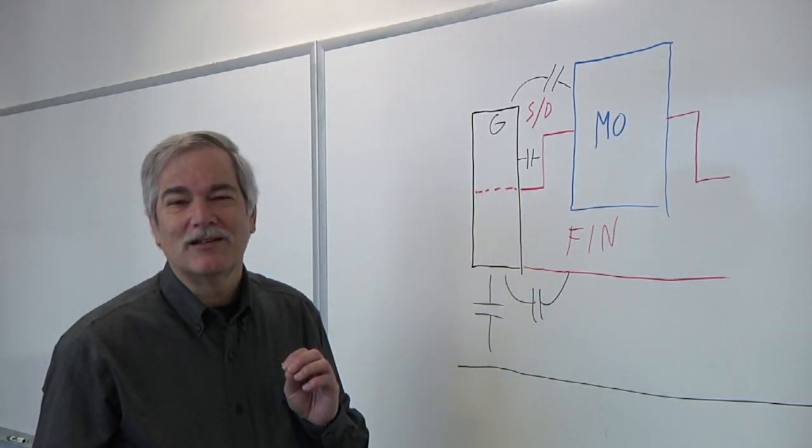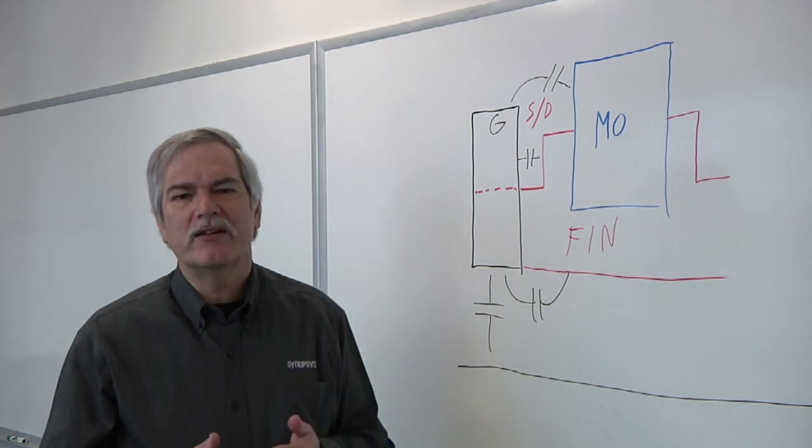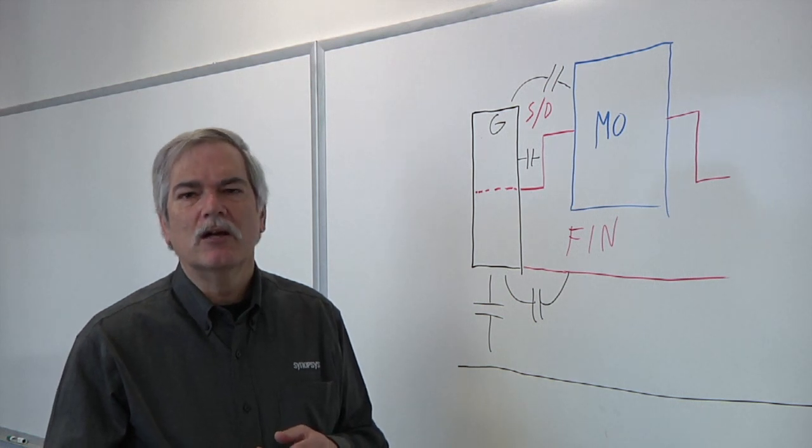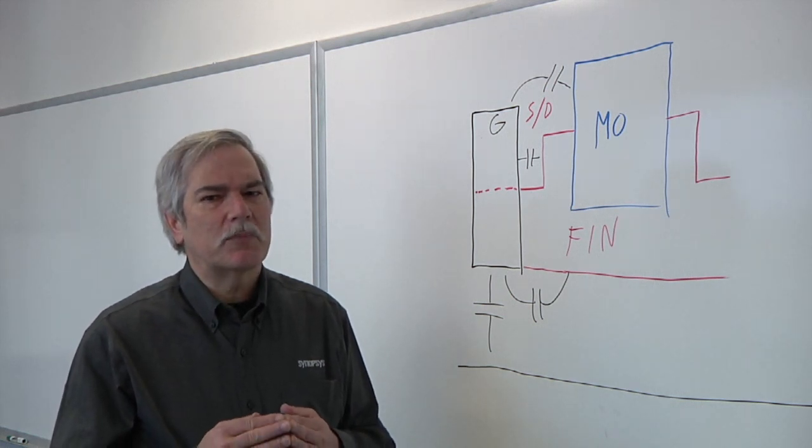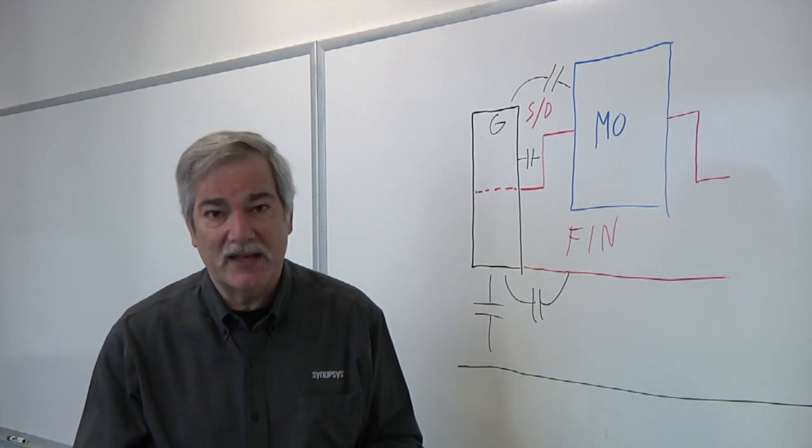So as the gate oxide thins out, what changes there as well? Well, with thinner gate oxide, you'll get larger capacitance involved with the gate oxide. In addition, people will use materials with fairly high dielectric constants, giving you even a larger capacitance.